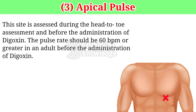Apical pulse. This site is assessed during the head-to-toe assessment and before the administration of digoxin. The pulse rate should be 60 BPM or greater in an adult before the administration of digoxin.